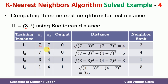Similarly, for the second instance: square root of (7−3)² + (4−7)², which equals 5. For the third instance: square root of (3−3)² + (4−7)², and the answer is 3. For the fourth instance: square root of (1−3)² + (4−7)², and the answer is 3.6.